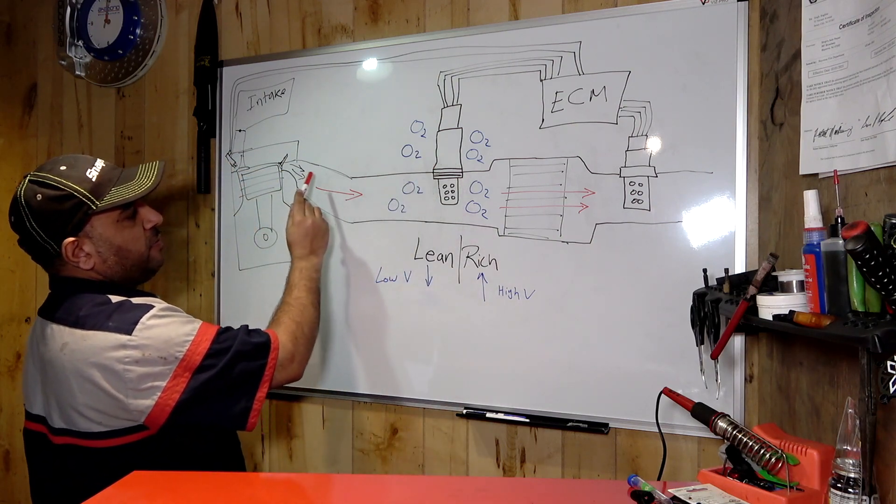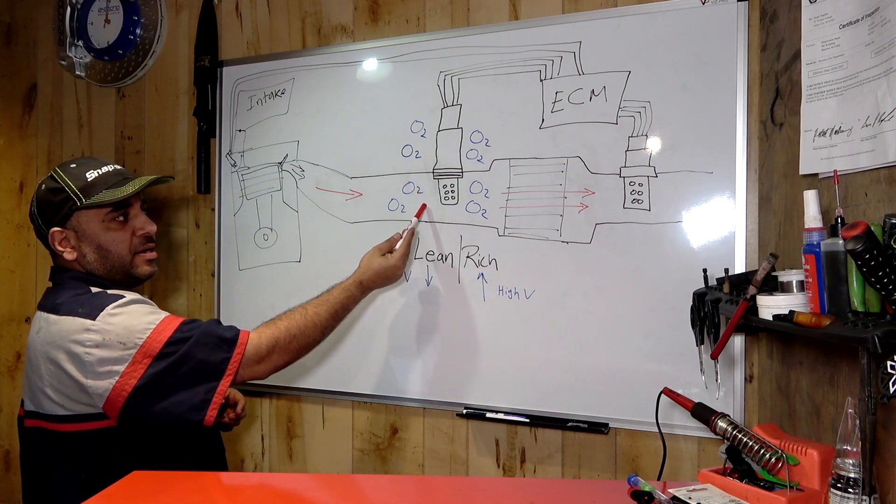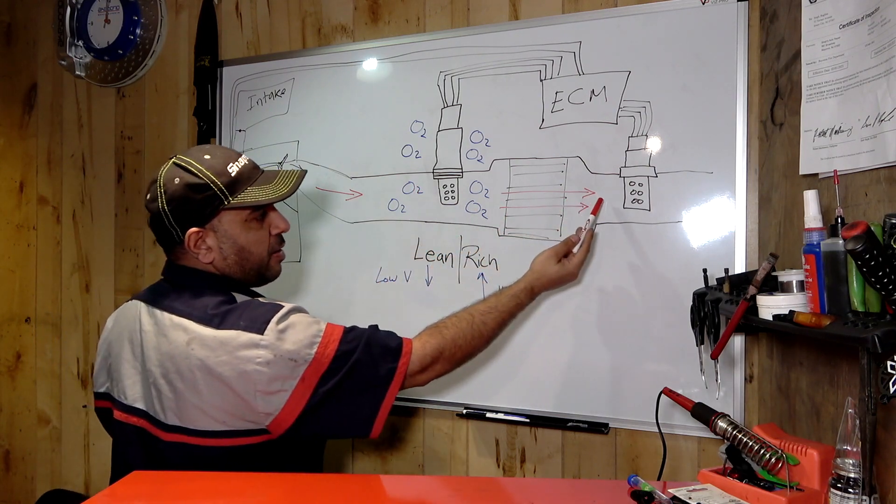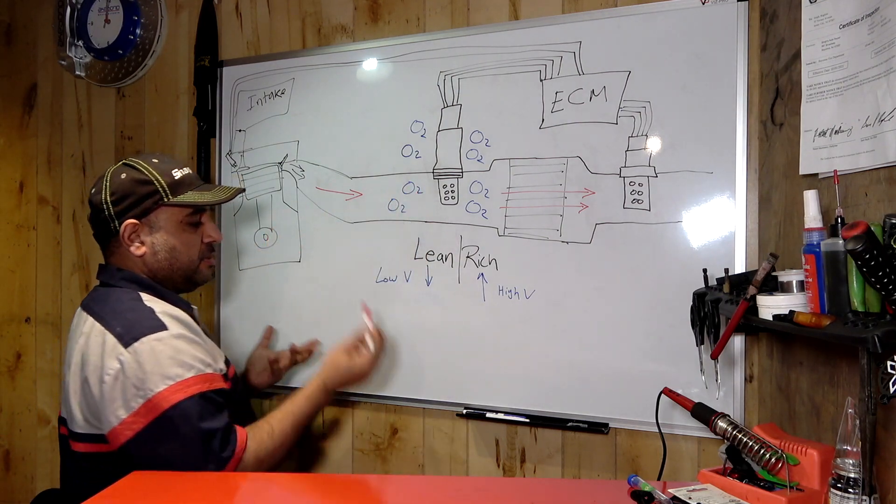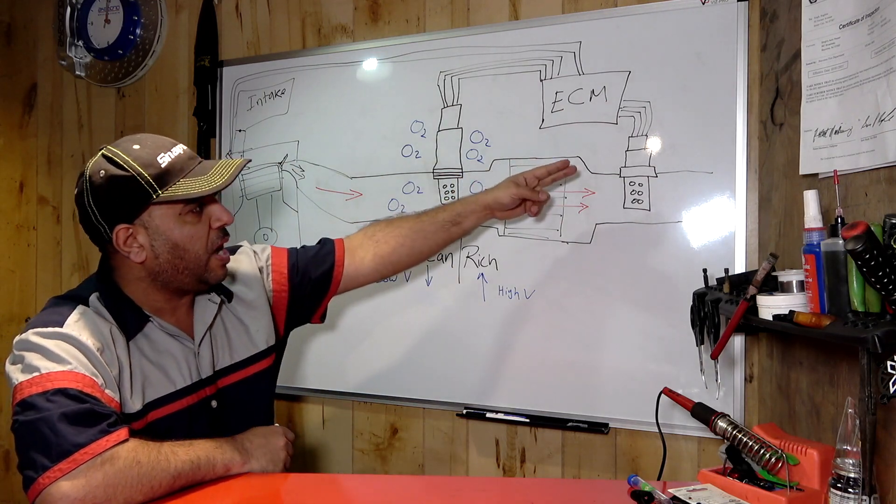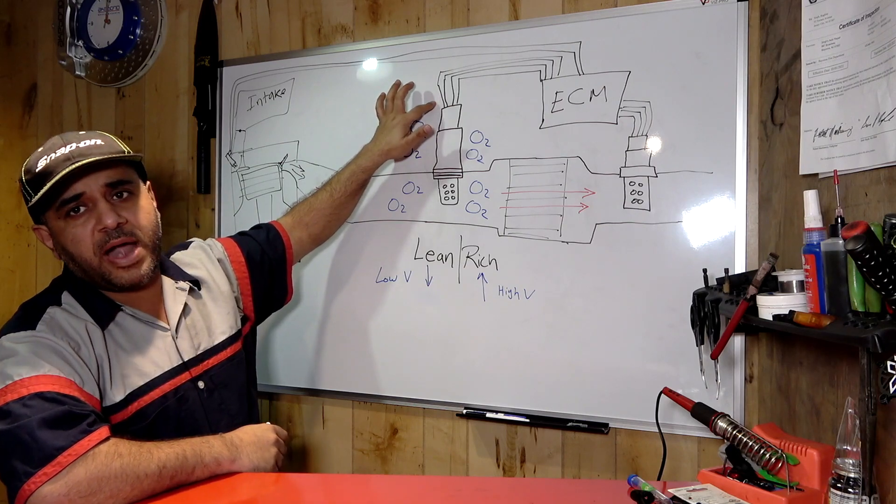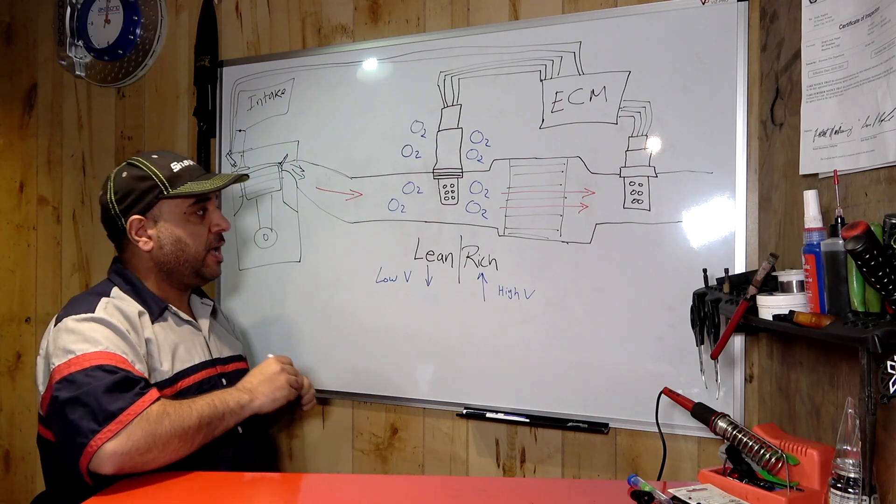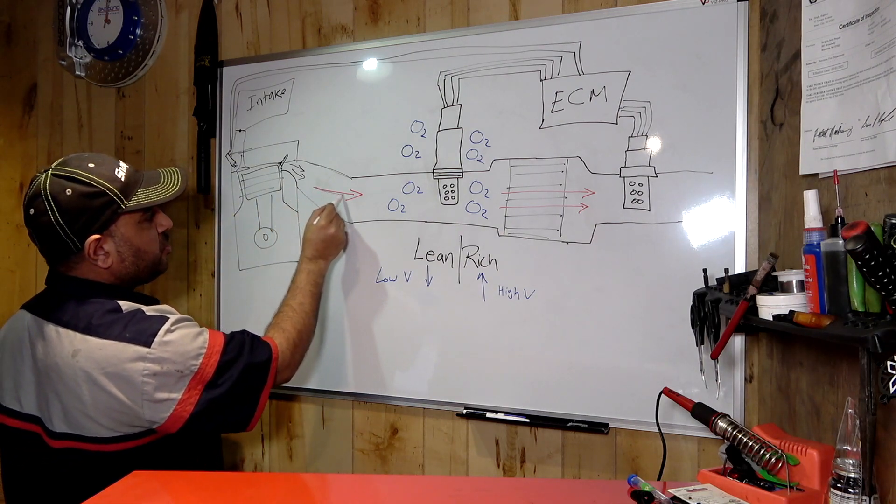This is an oxygen sensor. We got an upstream and a downstream: bank one sensor one, bank one sensor two. Another name is air-to-fuel ratio. Some of these sensors have different wires, but it's common to have four wires. Those are heated oxygen sensors.